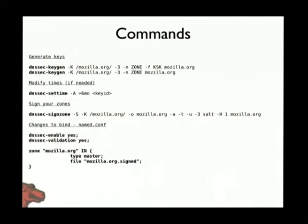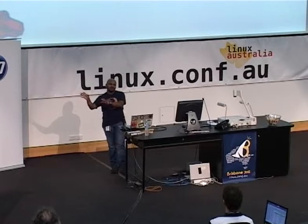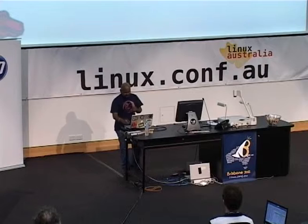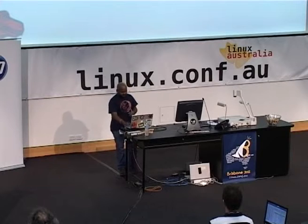Keygen generates keys. The only difference with the first line is the -fksk flag — that means it's a key signing key, and that's the only thing that differentiates a KSK from other keys. set-time is used so you can have multiple keys at once and offset keys to become active six months down the line — with BIND 9.7 it's easy to do this. signzone is what actually signs your zones. The -S flag reads all keys, figures out which is active at what point in time, and signs your zones accordingly. The changes to bind.conf for a master are pretty much four lines.